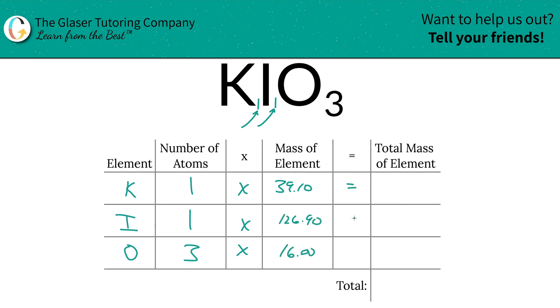Then what we're going to do is find the total mass of each particular element by simply multiplying this row across. So the total mass of potassium is 39.10, total mass of iodine is 126.90, and then oxygen is going to be 48.